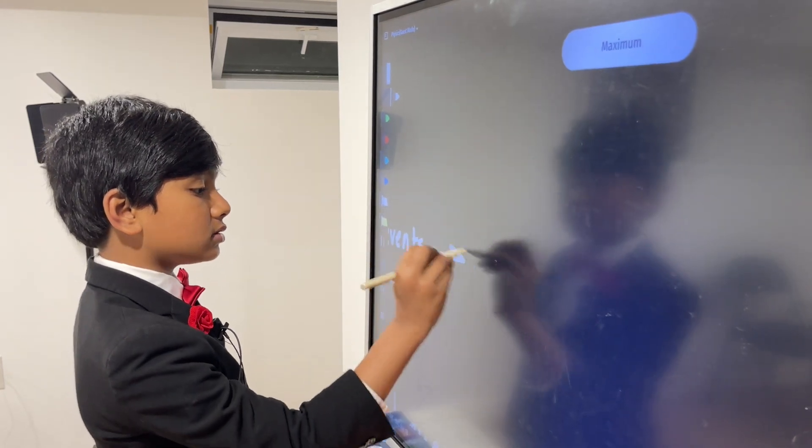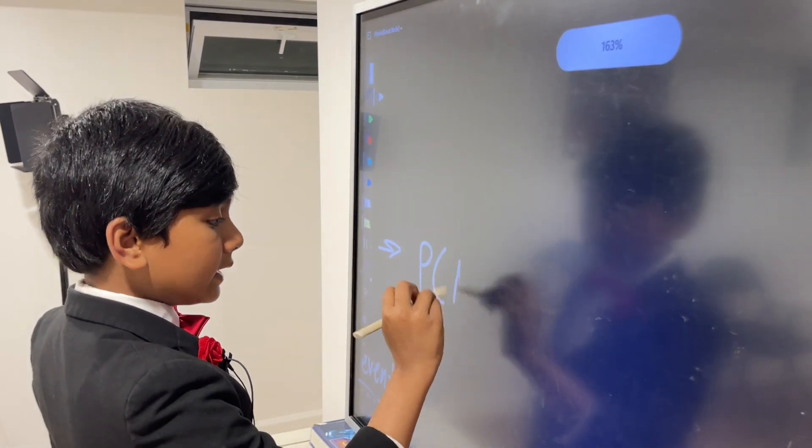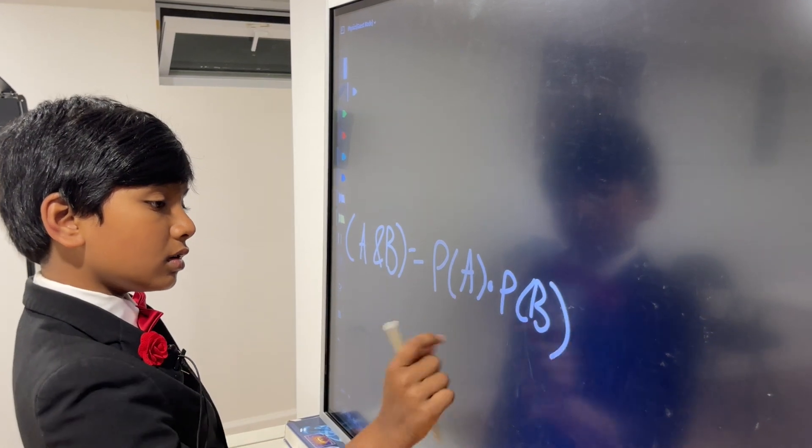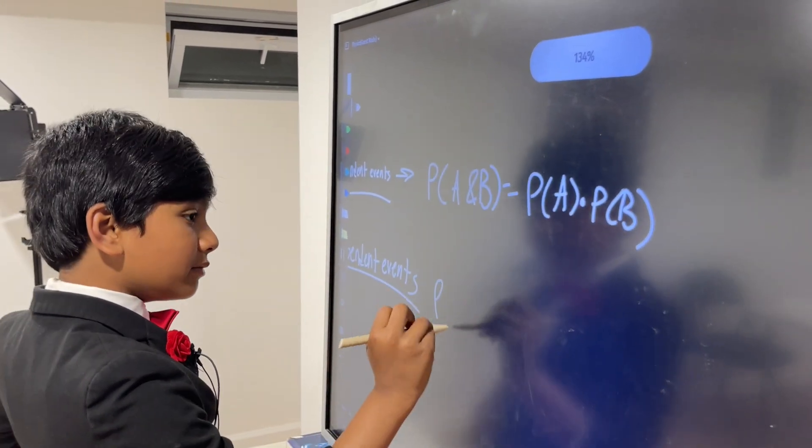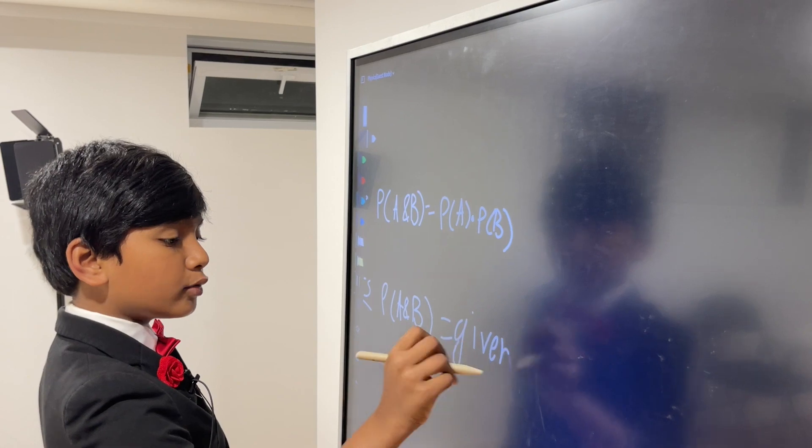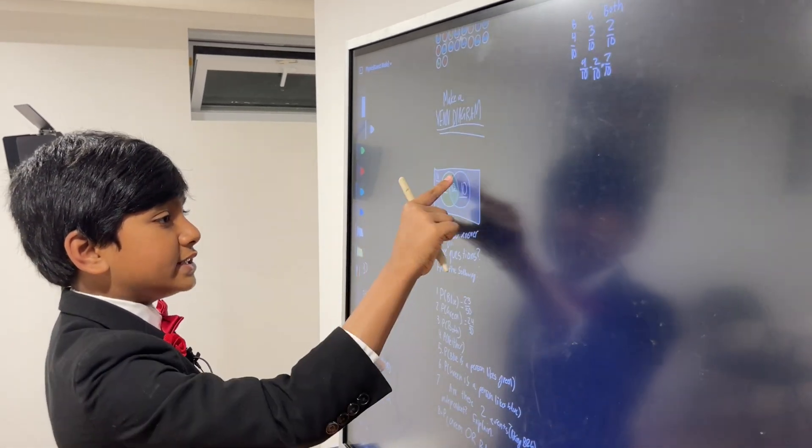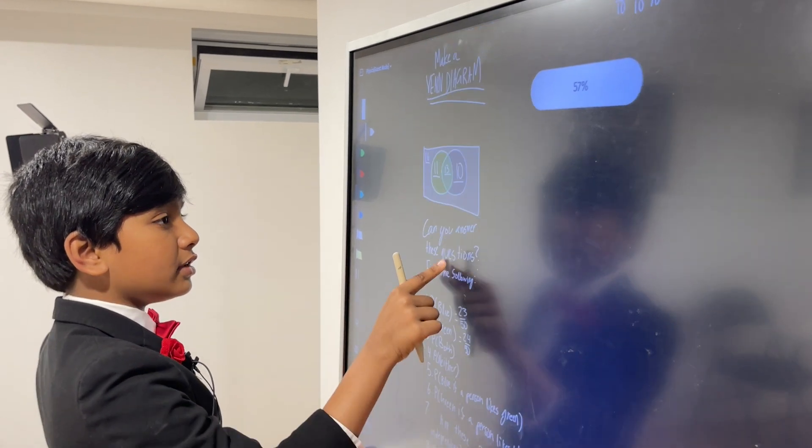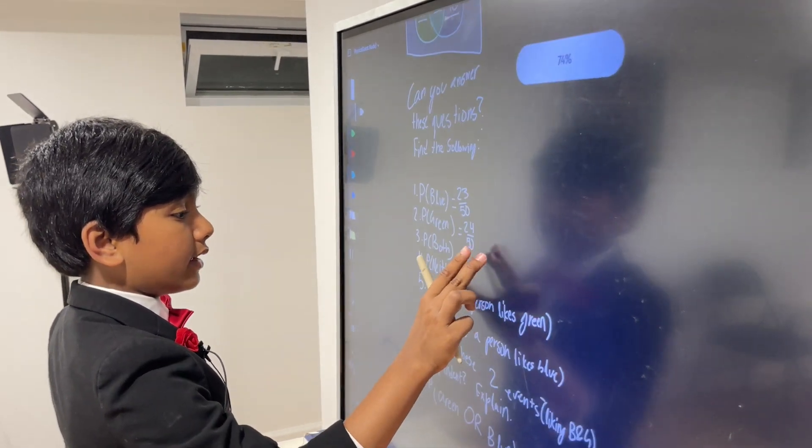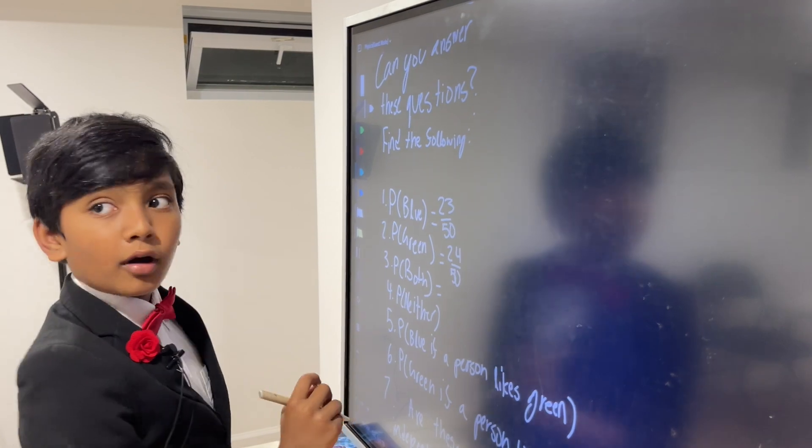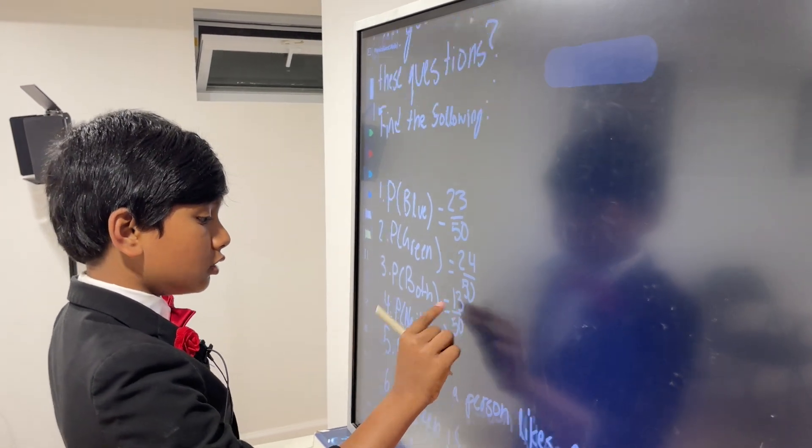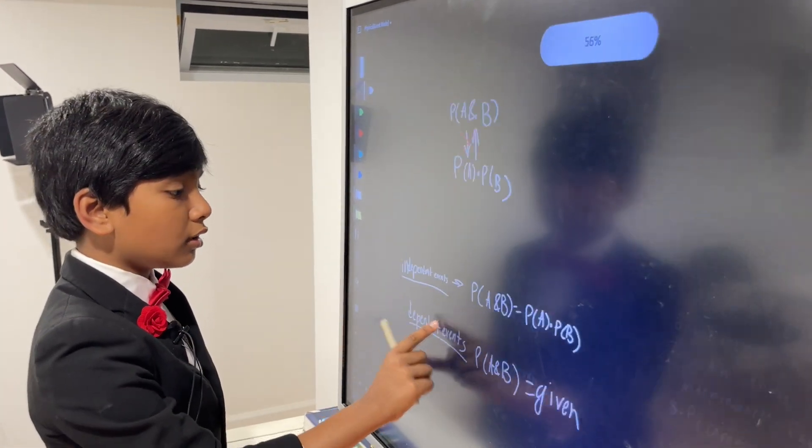Independent events, the chance of both happening is P of A times P of B. For dependent events, P of A and B will usually be given, like, for example, in this problem, where it's given as thirteen. Even though it's given, though, doesn't necessarily mean that these two are dependent events, like liking green and liking blue. So, the probability of both will be thirteen out of fifty. Also, we call this the multiplication rule. So, let's keep that in mind.